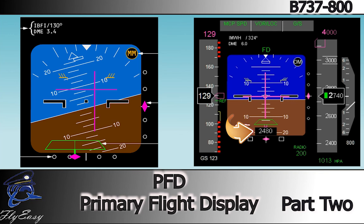Below 2,500 feet radio altitude with the localizer pointer in view, a rising runway symbol comes into view to provide lateral guidance. During landing at 200 feet radio altitude, the symbol rises toward the airplane symbol. If the localizer deviation is such that the localizer pointer is flashing, then the stem of the rising runway will also flash.